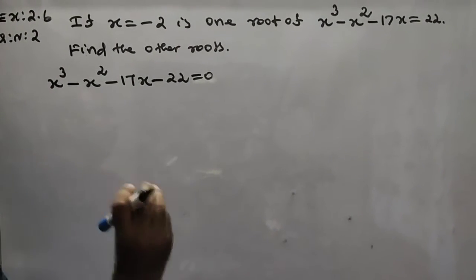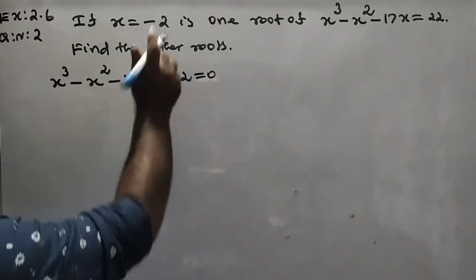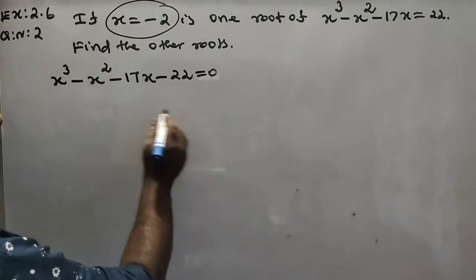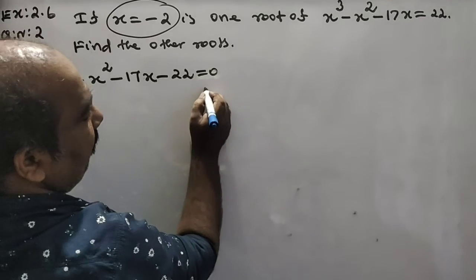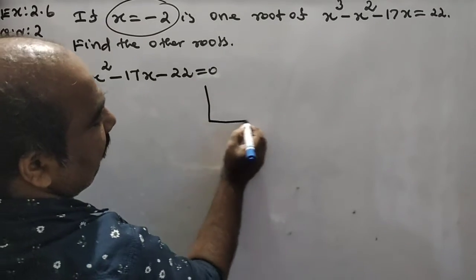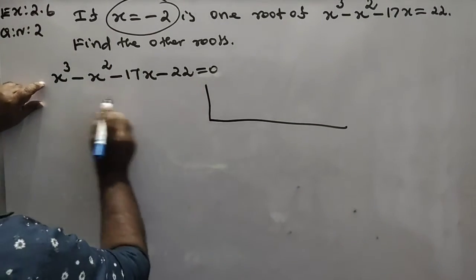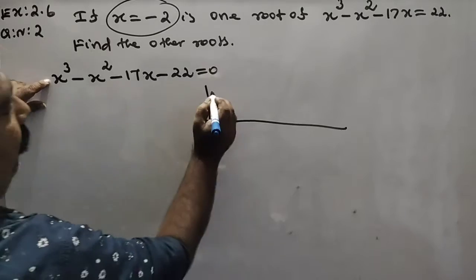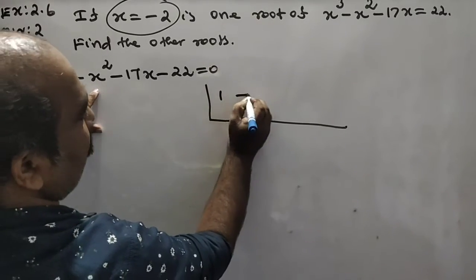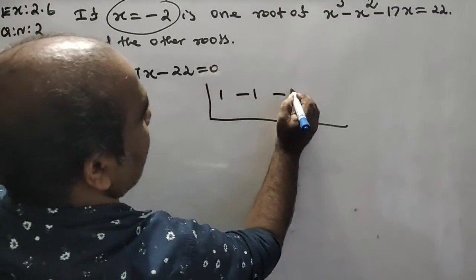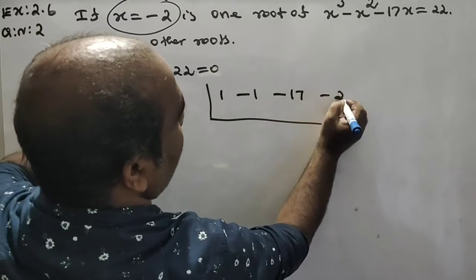This is a cubic equation, so it has three roots. Since x equals minus 2 is one root, we apply synthetic division with coefficients 1, minus 1, minus 17, and 22.